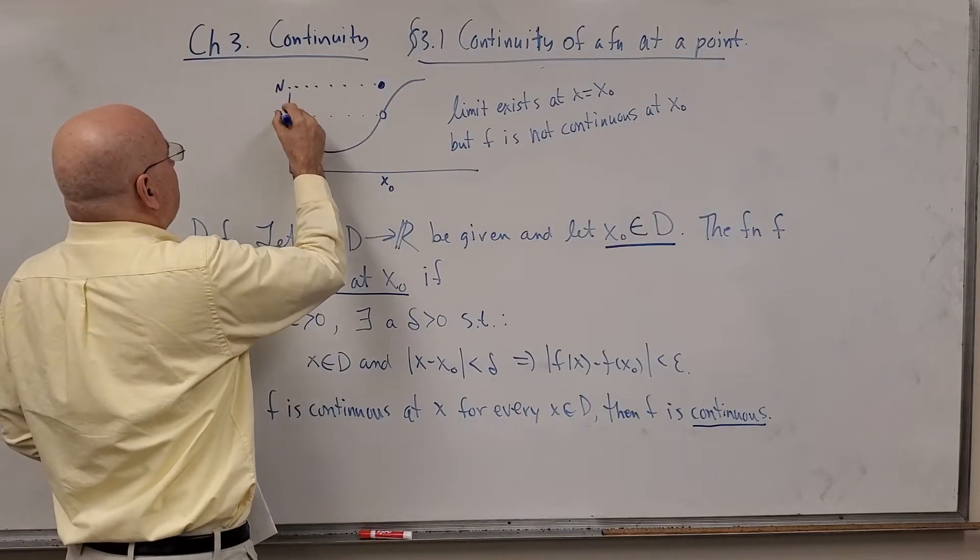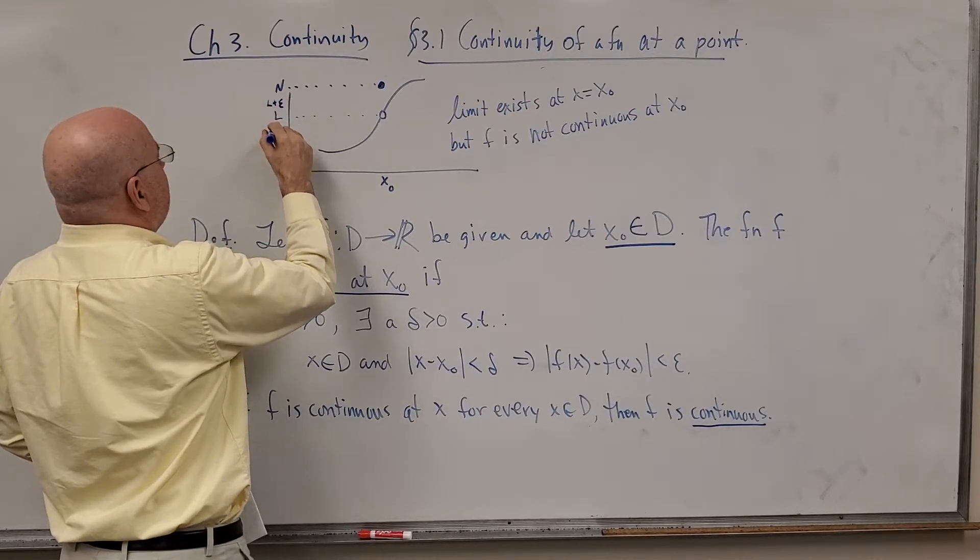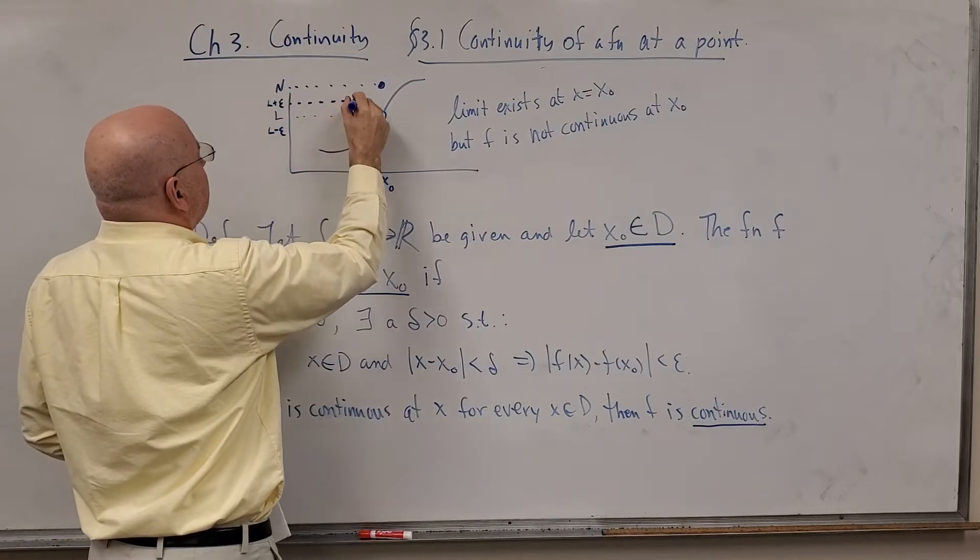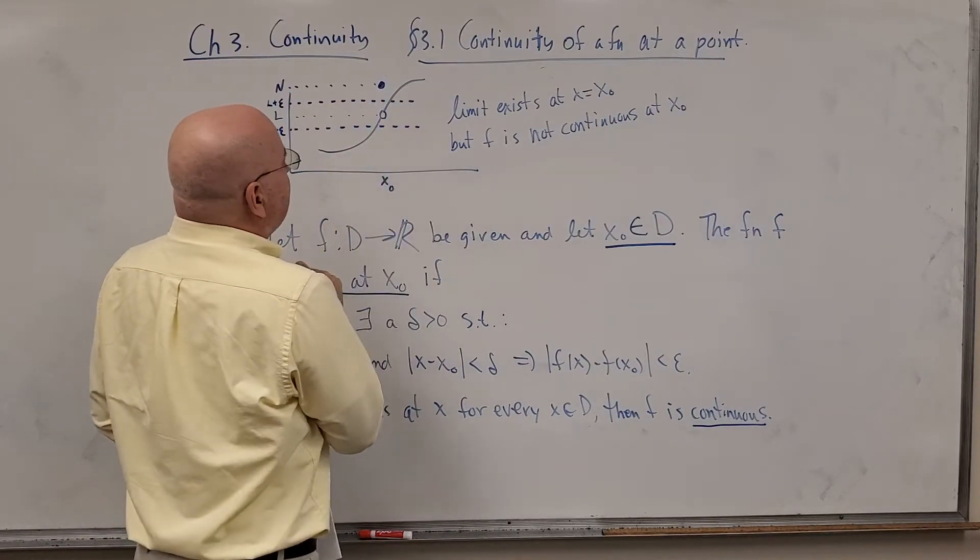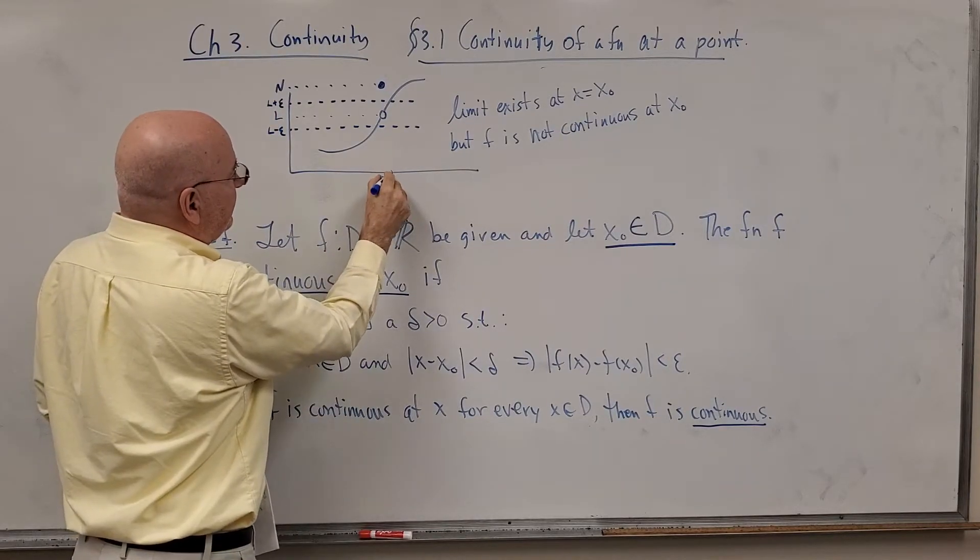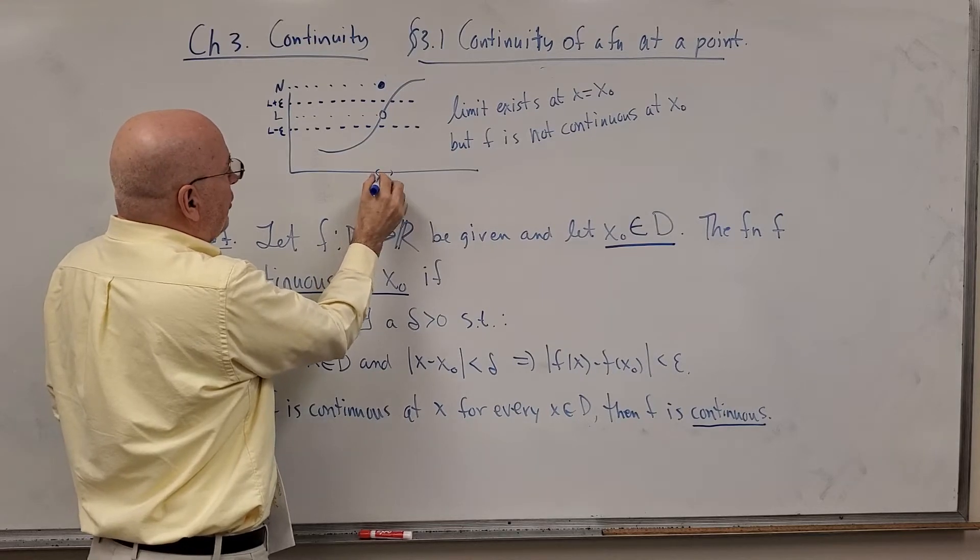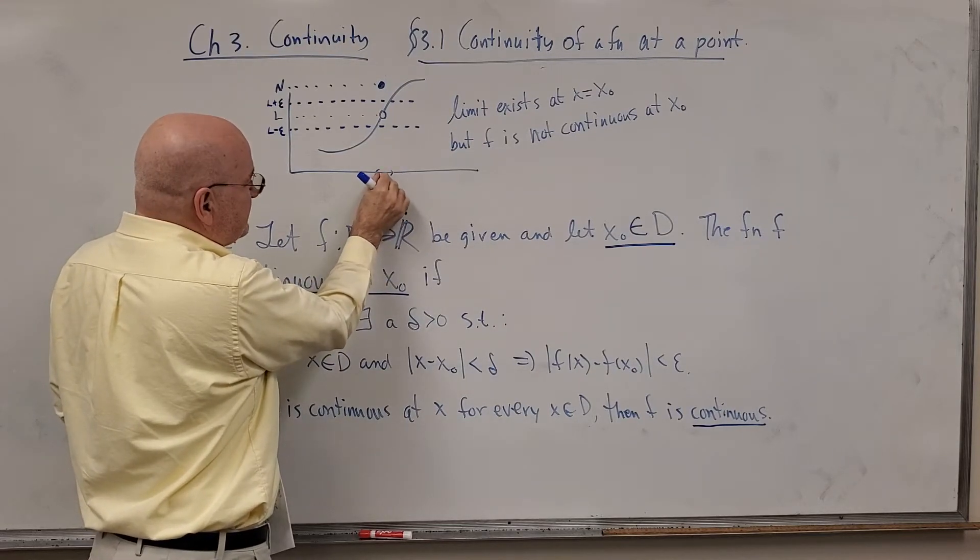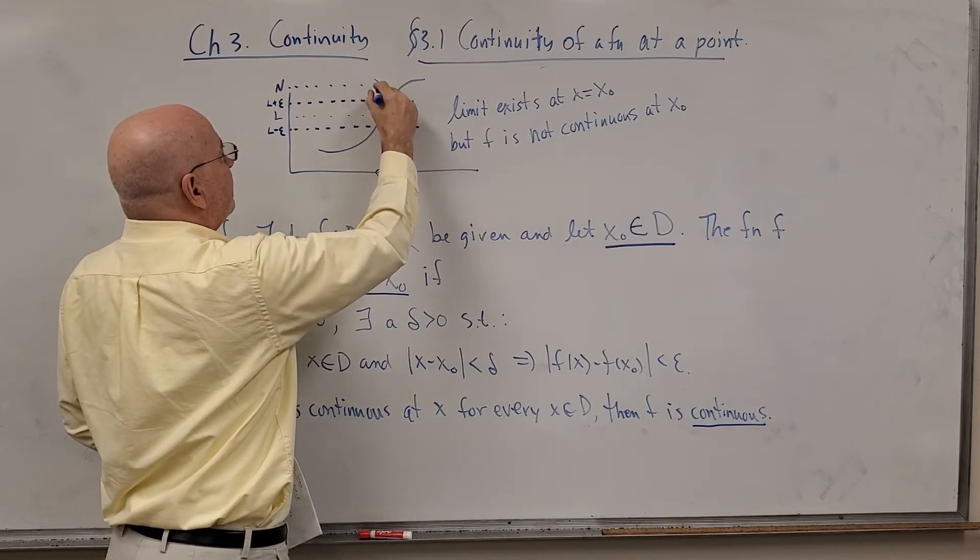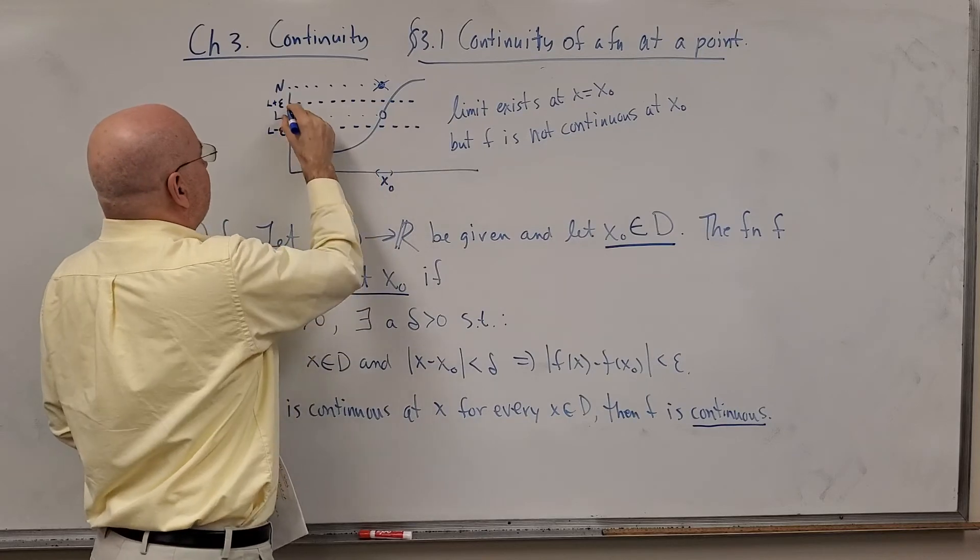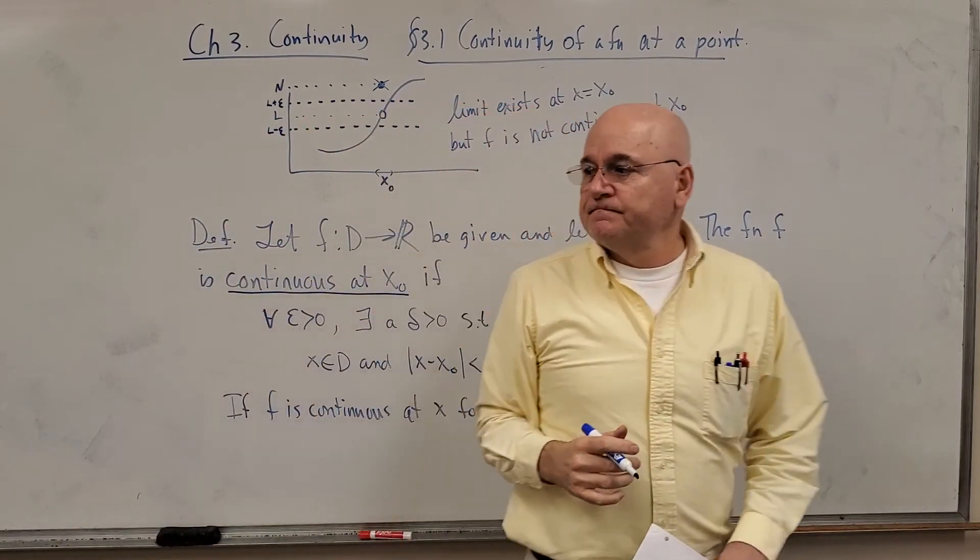So effectively, if you do an L plus epsilon and an L minus epsilon, you cannot find a delta small enough to make a little neighborhood where all of the function values of every X in this interval falls in this little tube. This guy is never going to show up in that tube or for any epsilon smaller than that. So very similar the definitions are.